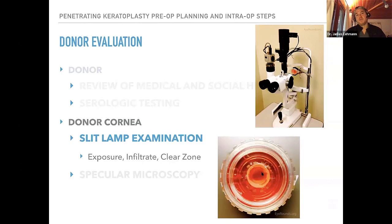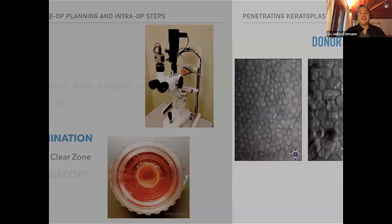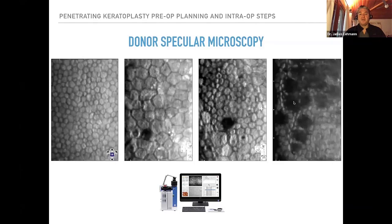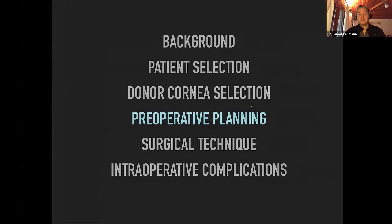Eye banks perform donor specular microscopy — equipment like the Konan system takes beautiful pictures from the viewing chamber. A good scan shows uniform endothelial cells. Polymegethism — larger cells filling space — indicates lower cell count and may be borderline. Pleomorphism and heterogeneity suggest hypooxygenation or another condition meaning the cornea is not in great shape. Guttae as seen in Fuchs' corneal dystrophy would also be visible, and you wouldn't want to use that cornea.